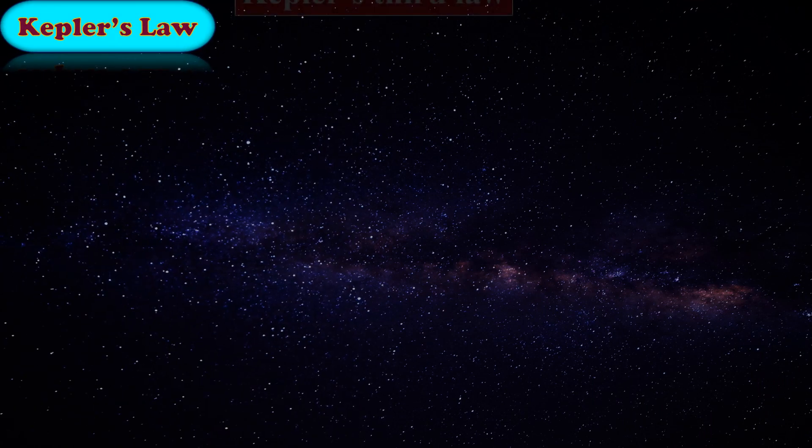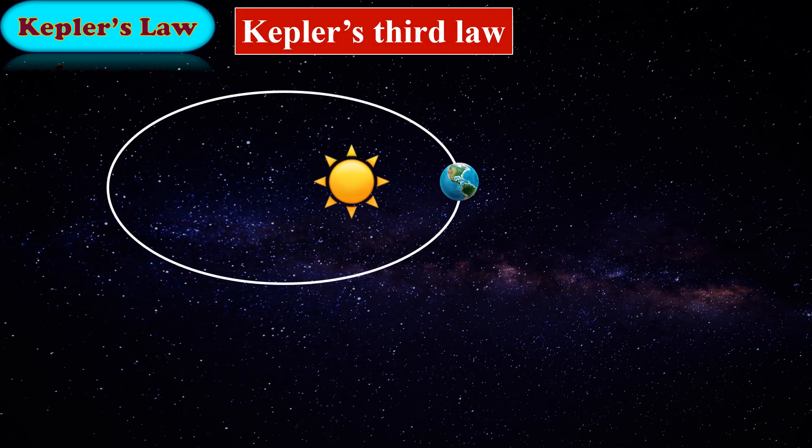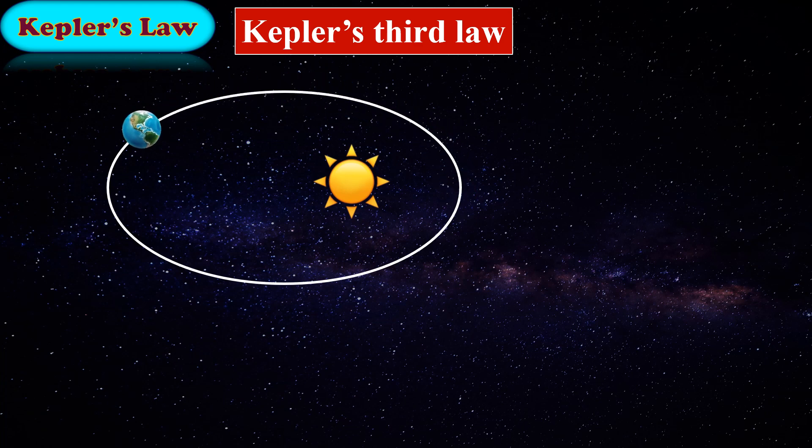Kepler's third law. The time taken by the Earth to complete one revolution is T. Here, the line represents the distance between the sun and the Earth.